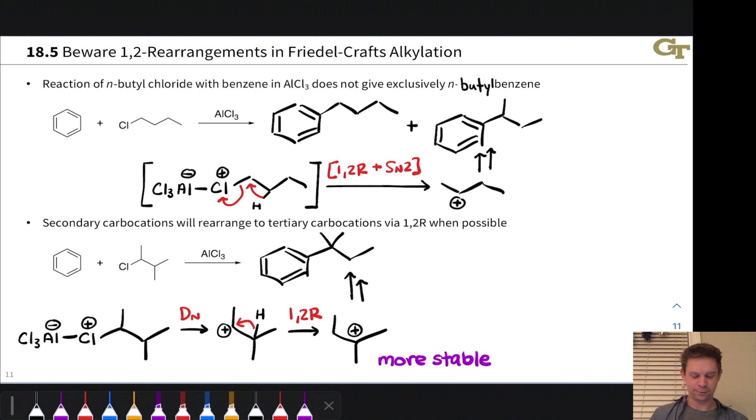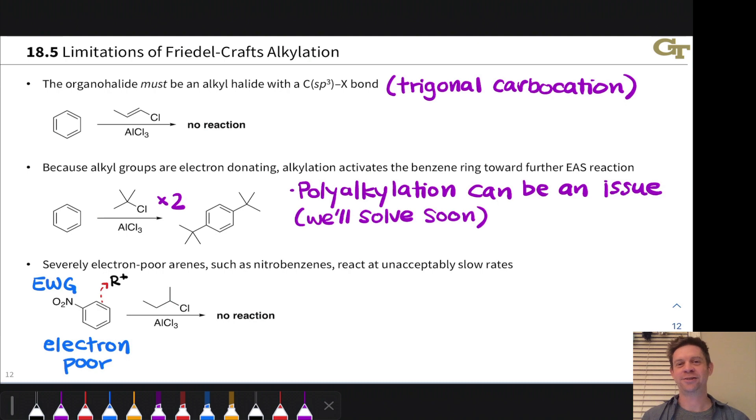And that cation is going to be the one in highest concentration and will give the major product, which is not the secondary alkyl product, but the tertiary alkyl product with benzene ring attached to this carbon linked to three other carbon groups and no hydrogens, via the intermediacy of this tertiary carbocation. So secondary carbocations are going to rearrange to tertiary carbocations. You've probably seen this before in the context of E1 and SN1 reactions. And it comes up in Friedel-Crafts alkylations as well. A few other limitations of the Friedel-Crafts alkylation if you weren't sick of it enough already. First of all, the organohalide must be an alkyl halide. Aryl halides, bromobenzene, chlorobenzene do not react in this reaction. And this is because those don't lead to relatively stable trigonal carbocations.